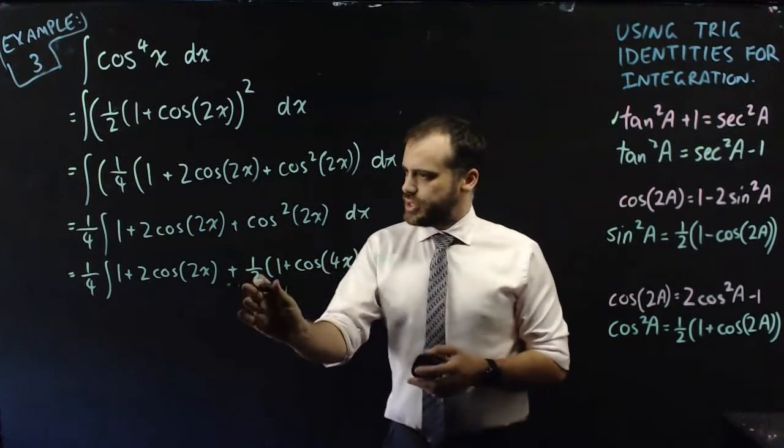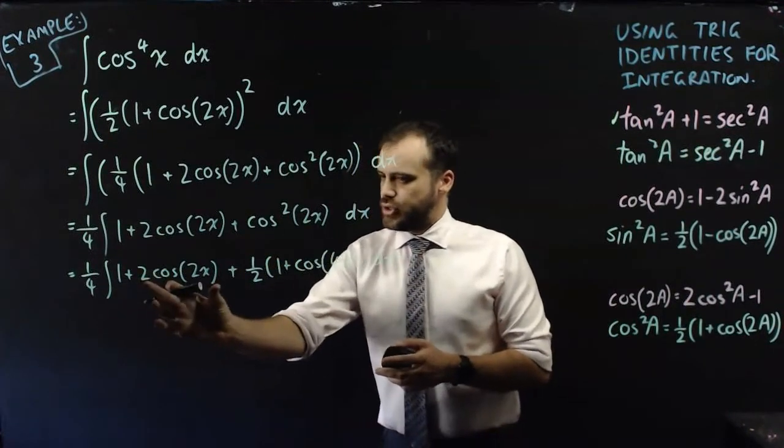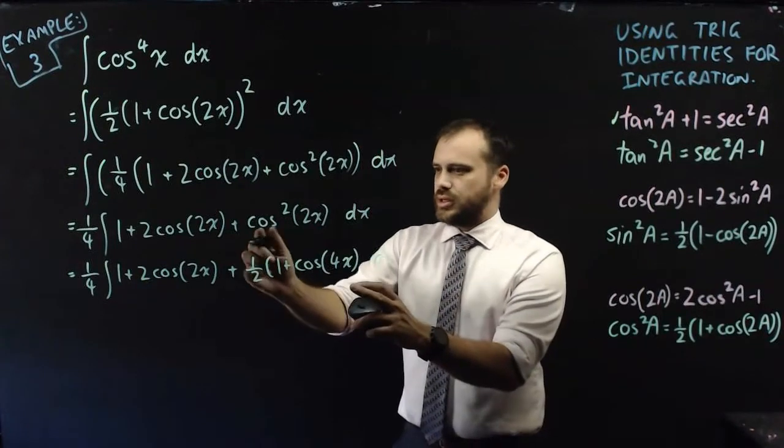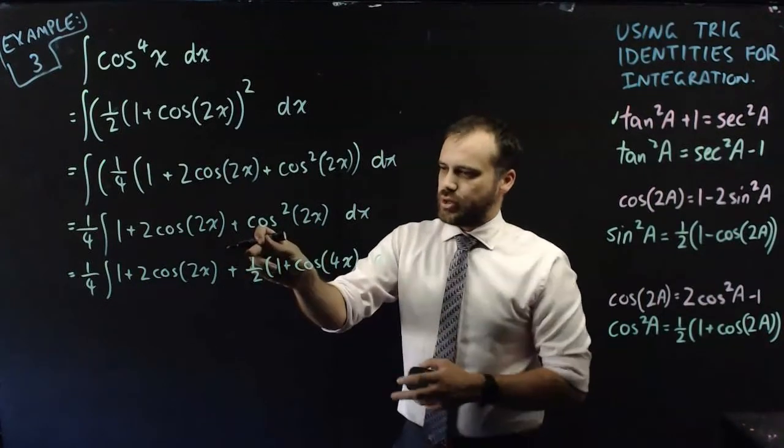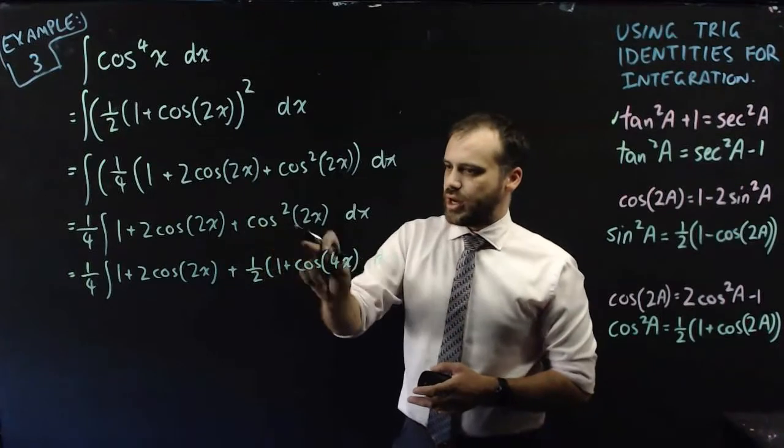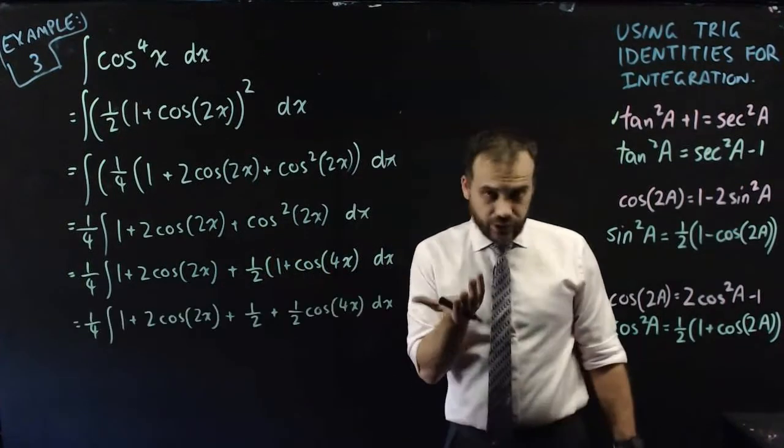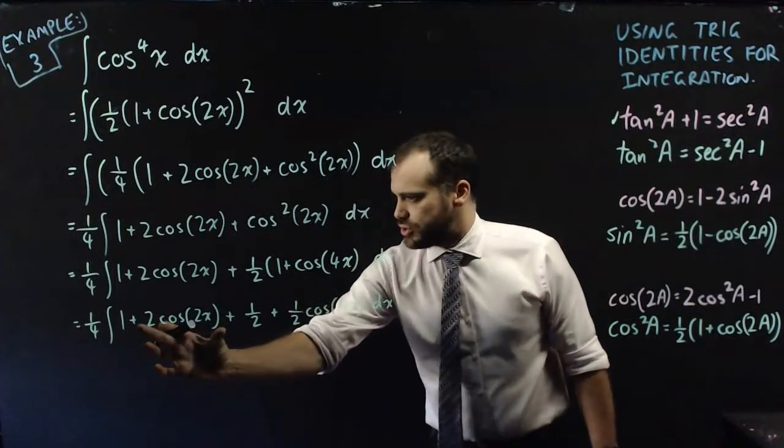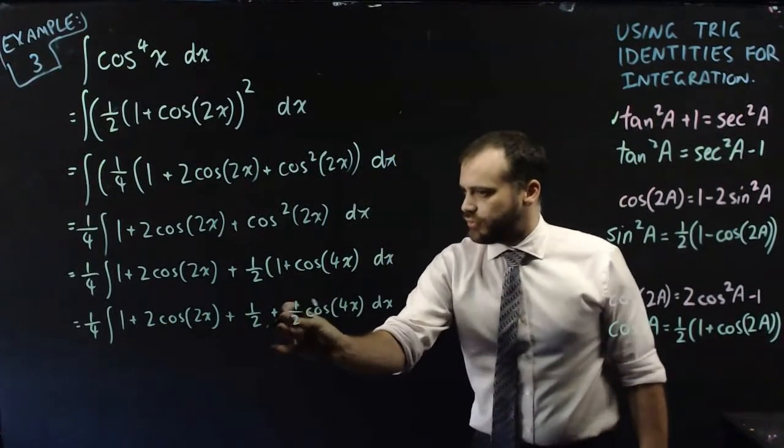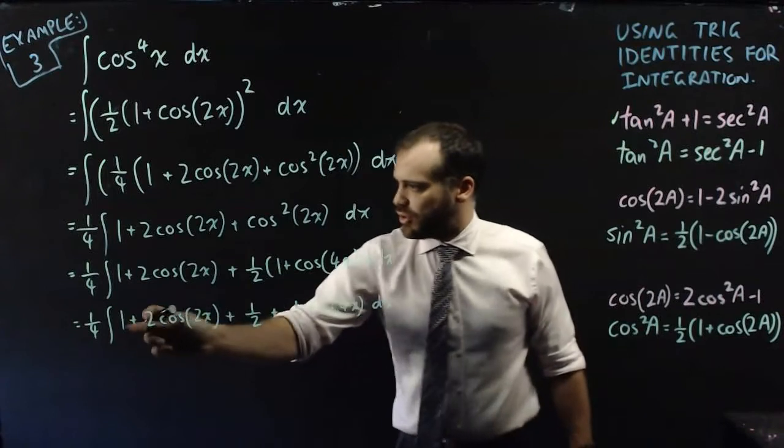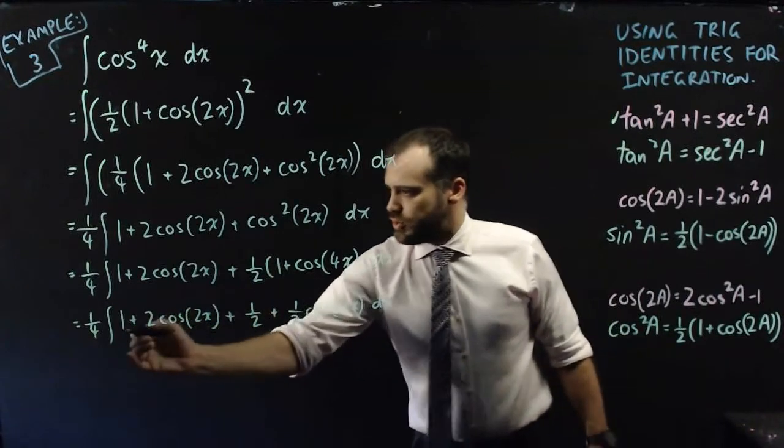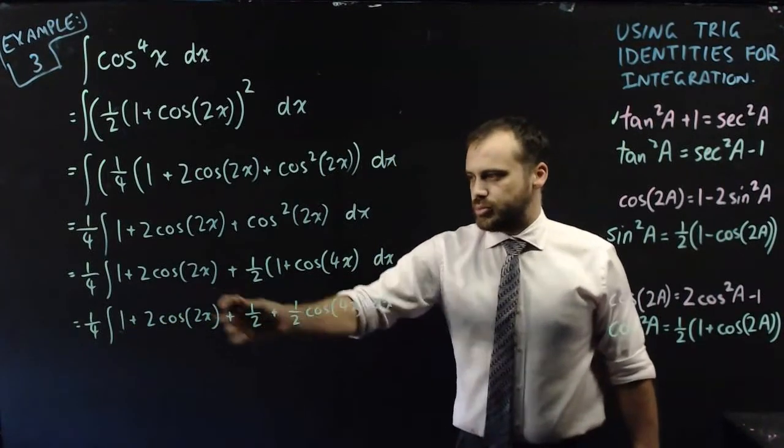Now I probably just need to expand those brackets. We've got a term, we've got a term, and then we've got this thing here. So a half times one will be a half, and a half times cos(4x). Then we're going to be able to integrate. So looking again, we have one plus 2cos(2x) plus one half plus this. You can see we have a constant and a constant here, so we can bring them together to be 3 over 2.